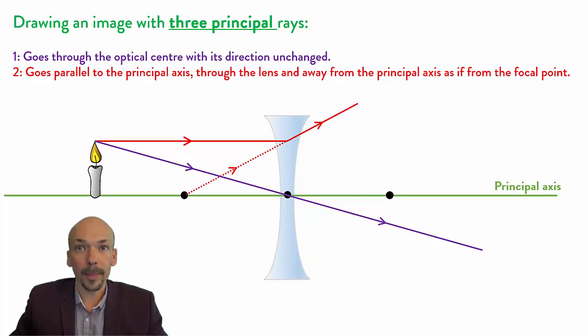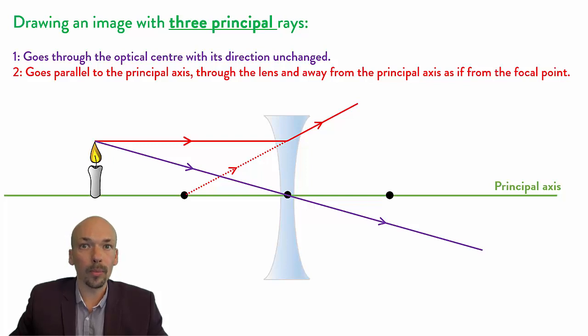So as if from this point. You need a ruler and you can put it so that you draw it away from the principal axis as if it came from the focus point.